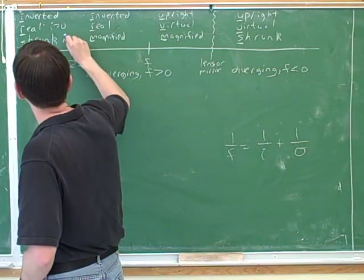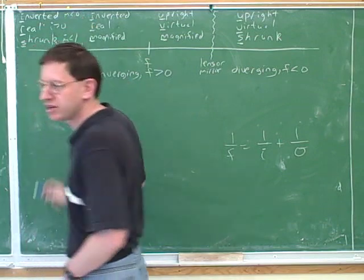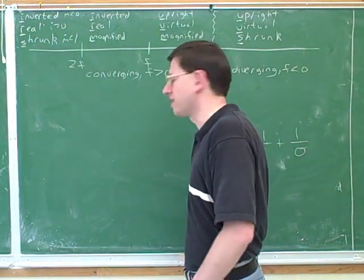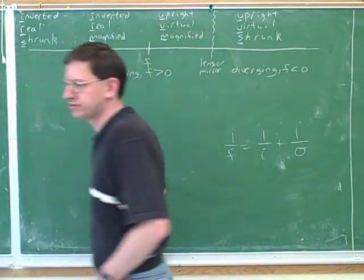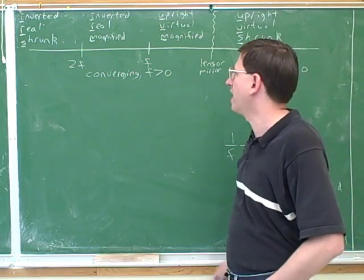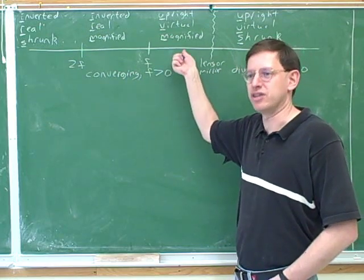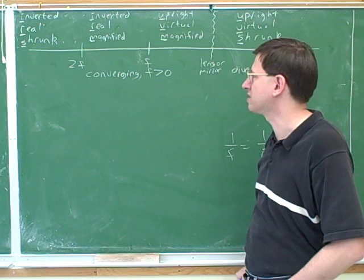For shrunk, I wrote down that the magnification was less than 1. And for inverted, I wrote that m was less than 0. I'm not going to do that on the board because things will get too messy. Everything is there in the chart again, because the sign conventions are crucial. Now you don't get to use a cheat sheet, so you need to have some way of memorizing this. The first thing you should do when you take the test is write down this chart. You need to have it committed to memory.